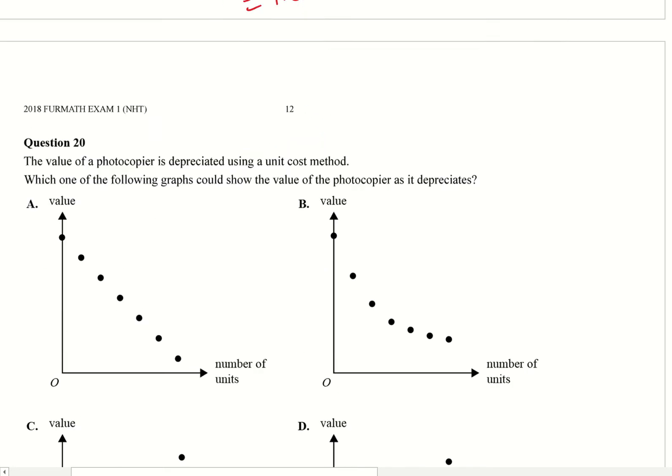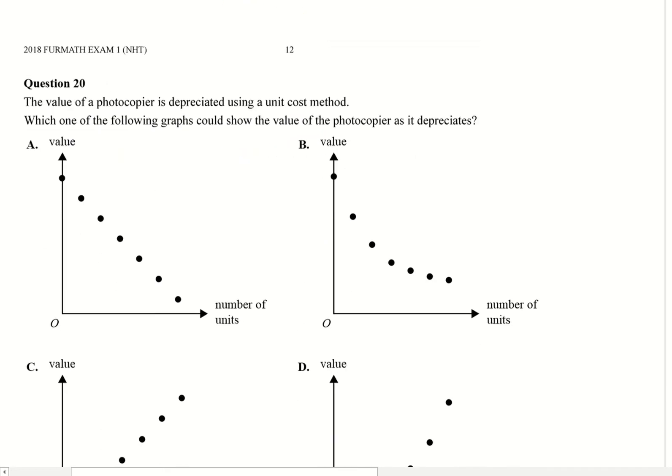So next question. Question 20: the value of the photocopier is depreciated using a unit cost method. Which one of the following graphs could show the value of the photocopier as it depreciates?